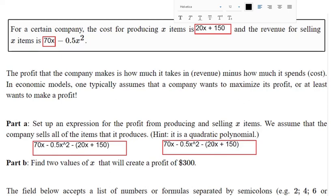I can distribute that subtraction sign to both terms inside the parentheses like this. And then I can clean it up by combining like terms. And we can put it in descending order while we're here. So we'll move the negative 0.5x squared term out front. Then you get 70x subtracted by 20x makes 50x. And then subtracted by 150 at the end. So that's the cleaned up version of my profit function.